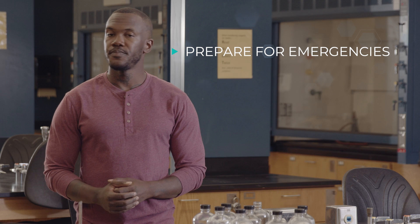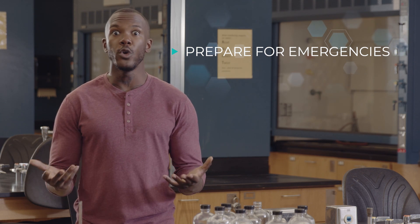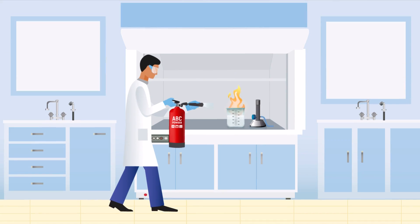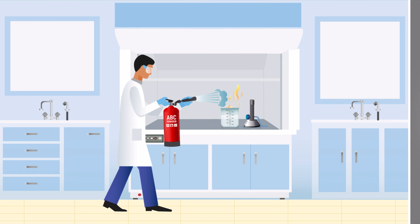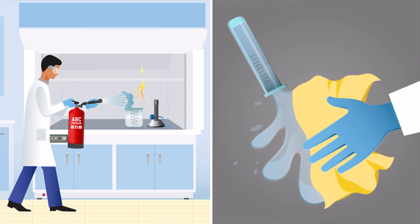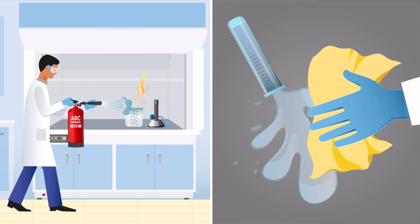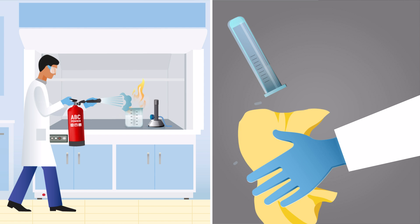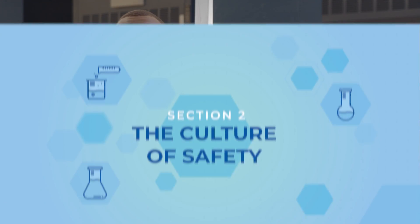The final step in RAMP is to prepare for emergencies. If something goes wrong, are you prepared? Do you know how to handle a fire or respond to a spill? We go over these scenarios in more detail in other videos, but just remember that you should consciously think about what might go wrong in an experiment and then be ready to respond.